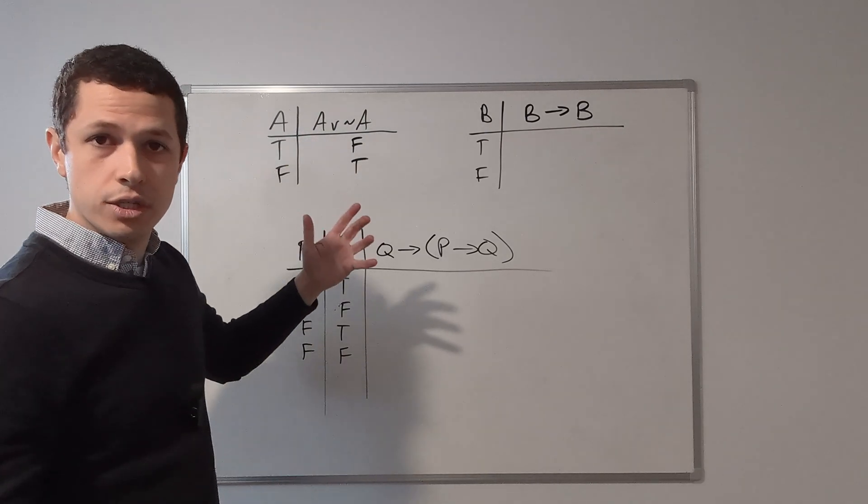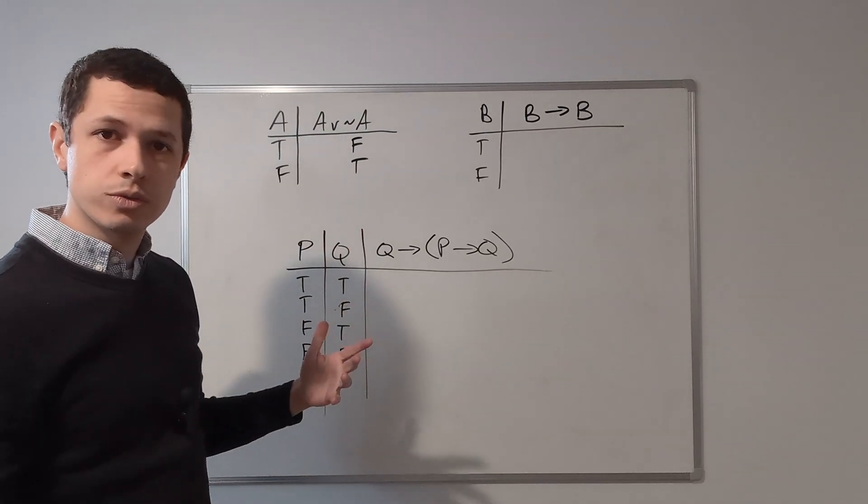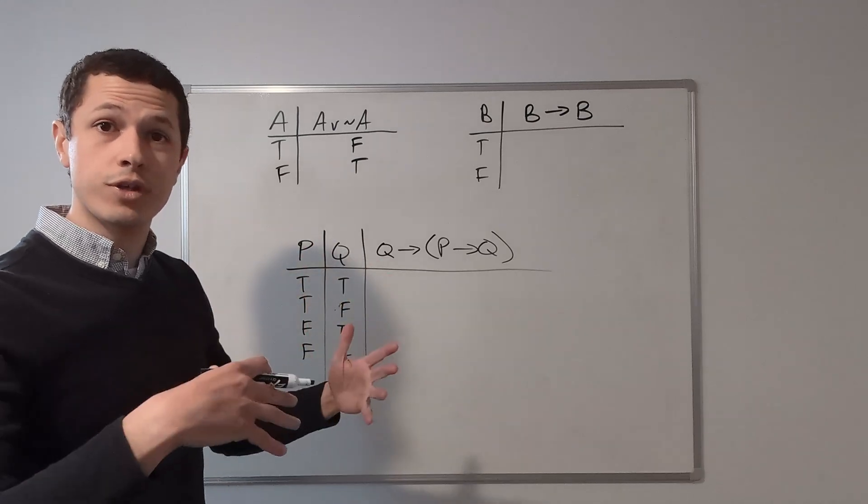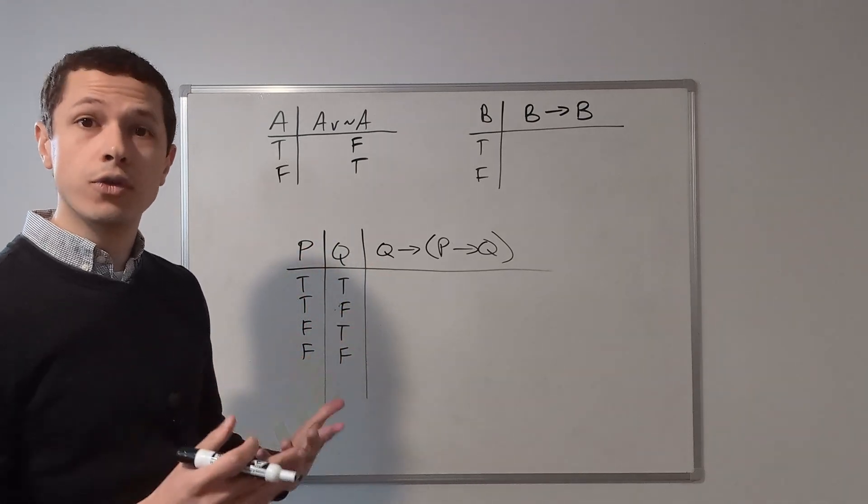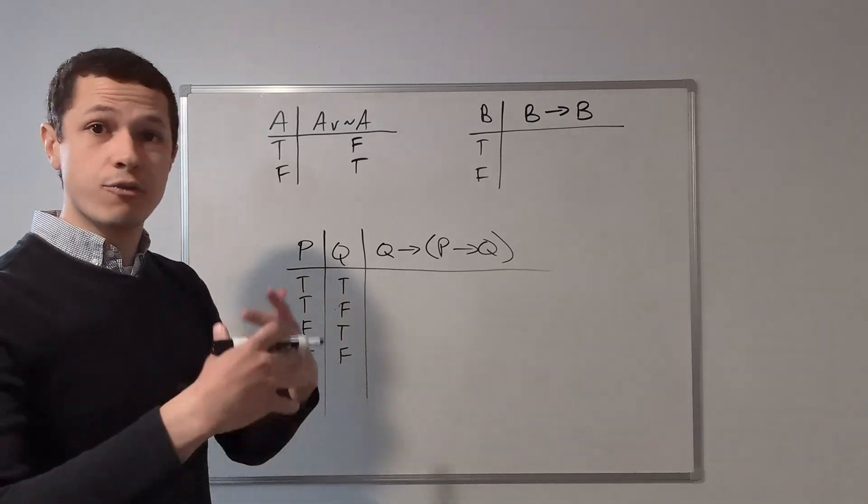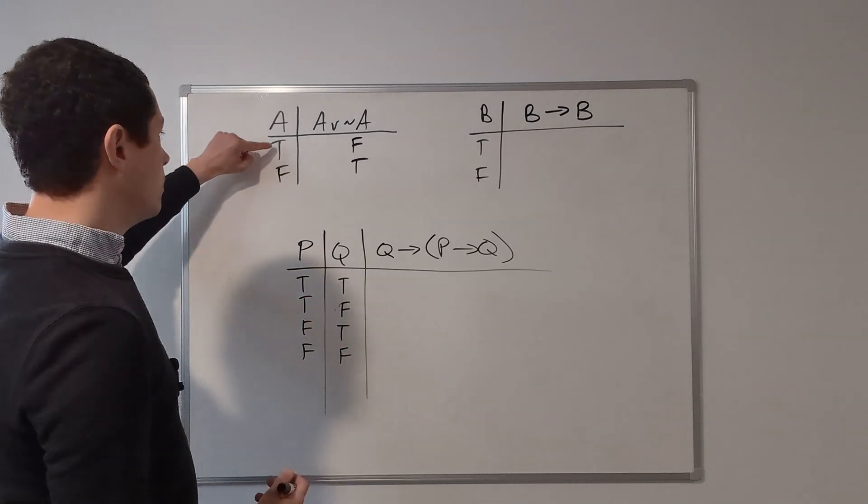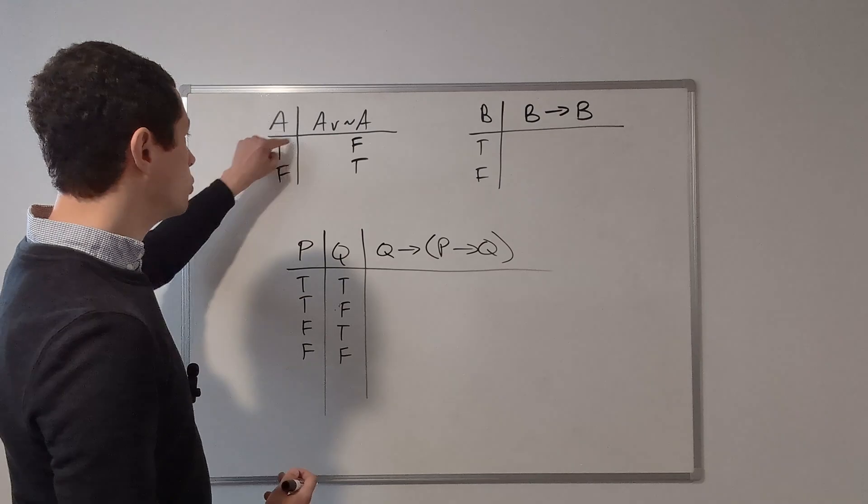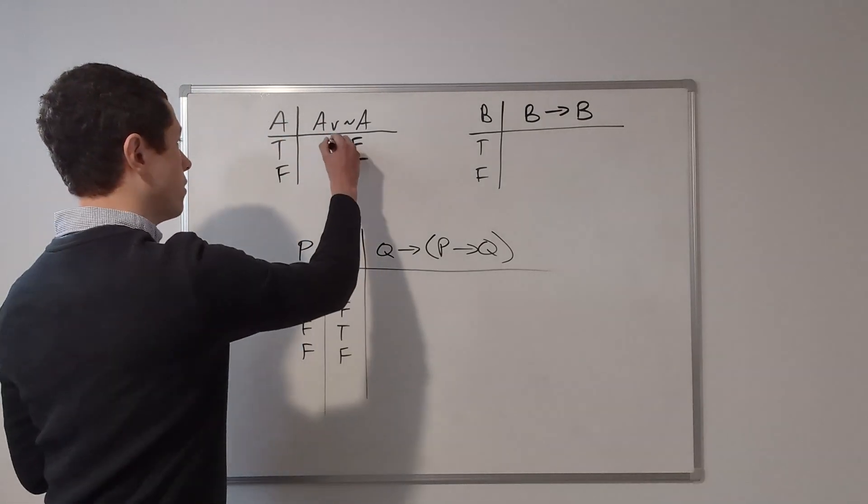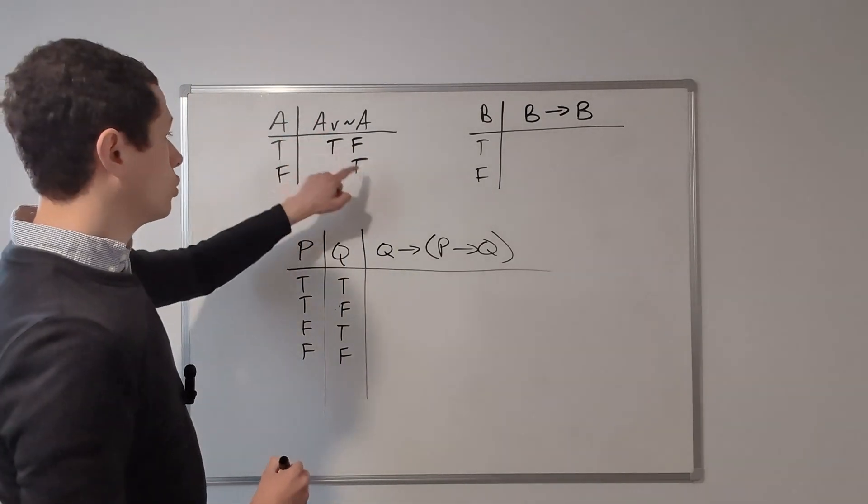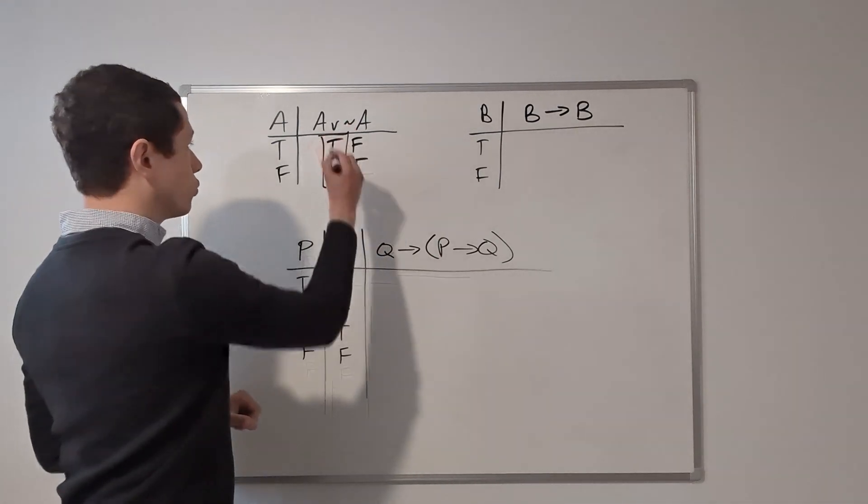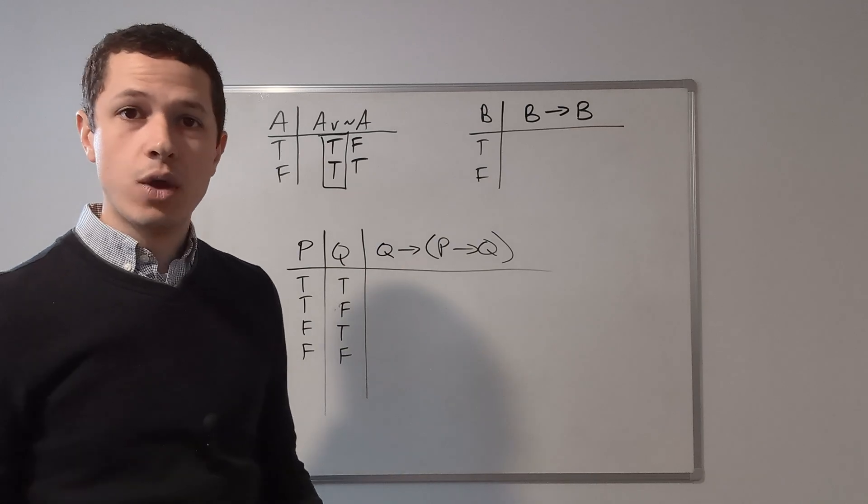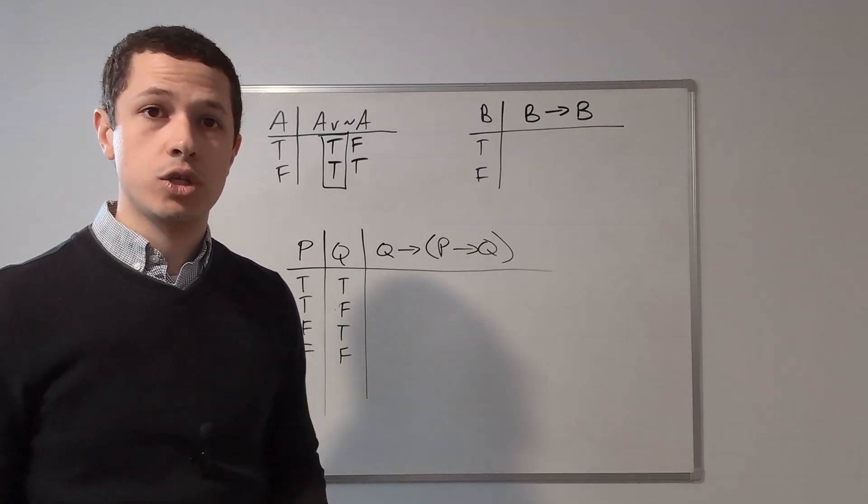So remember, a disjunction is false when both disjuncts are false. Otherwise it's true. So it's true in every other scenario. True or false, that's going to calculate to true. False or true, that's going to calculate to true. Every single row is true. Therefore, A or not A is a tautology.